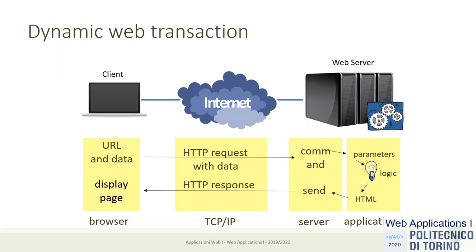I wrote 'command and parameters' because usually this logic should generate different results every time, so it needs some inputs in order to generate an output compatible with the request. There are mechanisms by which we can send parameters to the application logic. For example, if this is a web server that can show my email messages, this software should show my emails and not those of another user. The software must discriminate user one from user two and give the correct information to each of them without confusion.